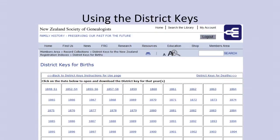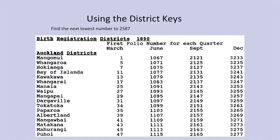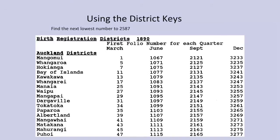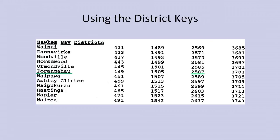This uses the district keys which the New Zealand Society of Genealogists have now put on their website in the members area, so you do need to be a member to access those. If you click onto the year 1890, it will bring up the scan of those pages. We are looking for the next lowest number to 2587, and you will see that it is in the September quarter in Purongahau. Purongahau is about 110 kilometres south of Napier in the Hawke's Bay district.